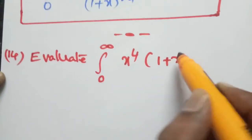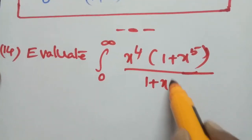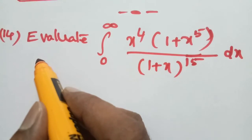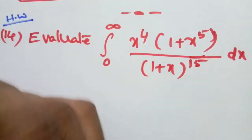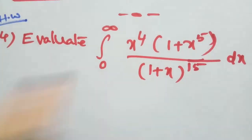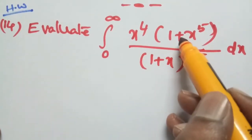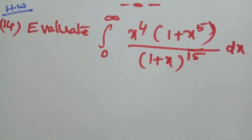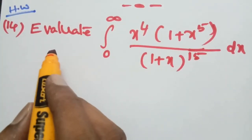Problem number 14: evaluate the integral from 0 to infinity of x to the power 4 times (1 plus x to the power 5) divided by (1 plus x) to the power 15, dx. Following the same procedure as above, the answer is 2 times beta(10, 5). In the earlier problem there was a minus so we got 0; here there is a plus so we get 2 times beta(10, 5).